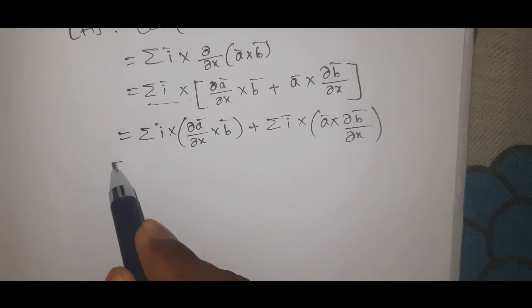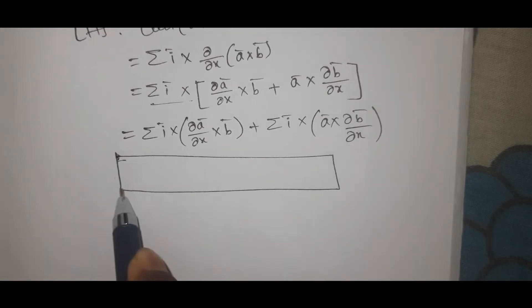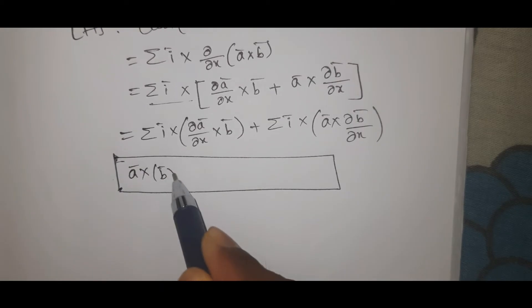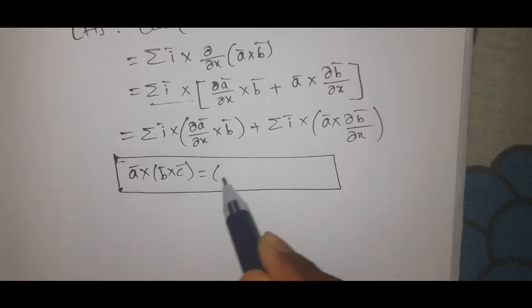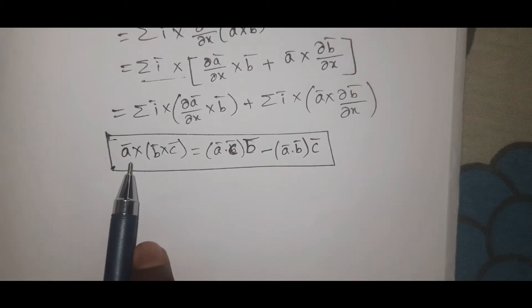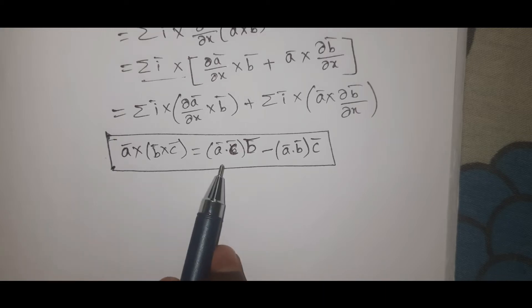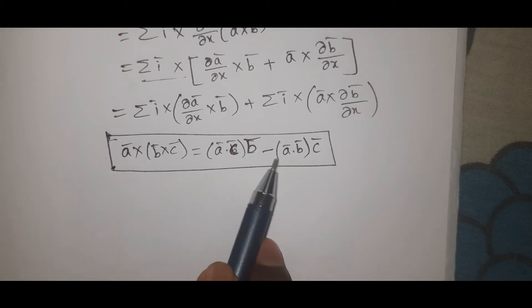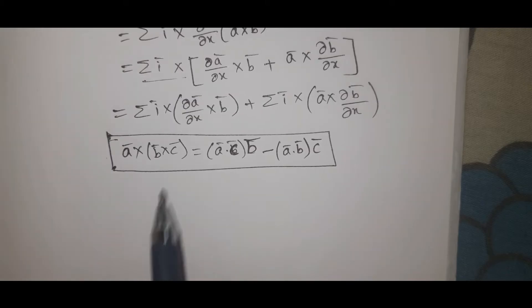We use the vector triple product form: Ā cross (B̄ cross C̄) equals (Ā·C̄)B̄ minus (Ā·B̄)C̄, where here A is i̅, B is ∂ā/∂x, C is b̄.